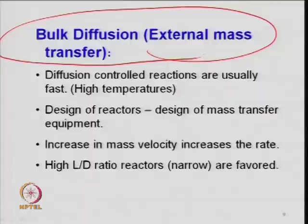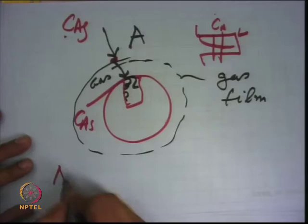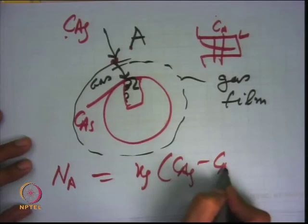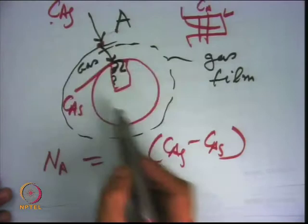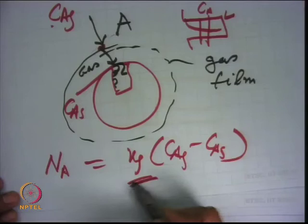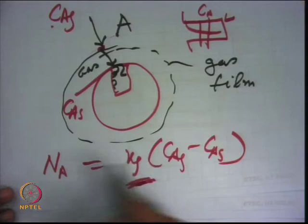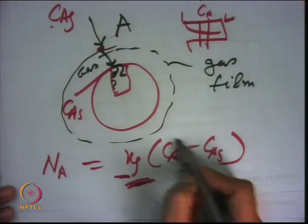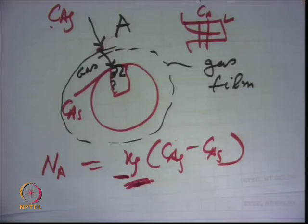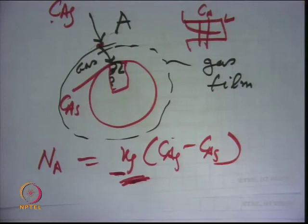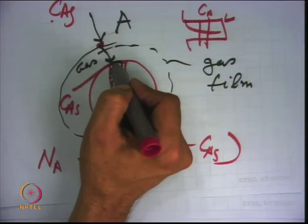For external mass transfer, the moles transported N_A is given by k_g times (C_AG minus C_AS), where C_AG is the concentration in the main body and C_AS is the concentration at the external surface of the solid, and k_g is the mass transfer coefficient. If there is no mass transfer resistance — no film of the gas — then C_AG will approach C_AS, meaning there is no concentration difference, and the two concentrations will be the same.